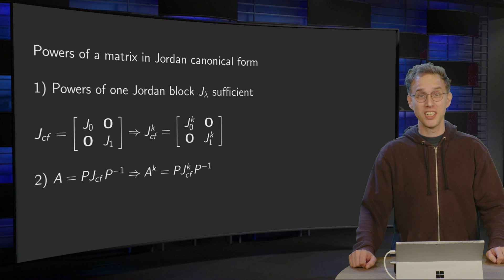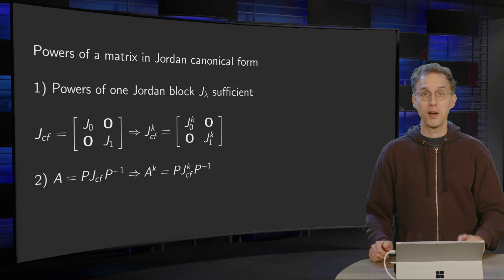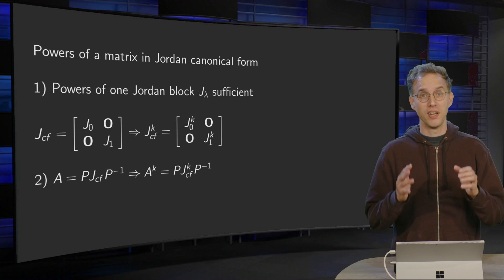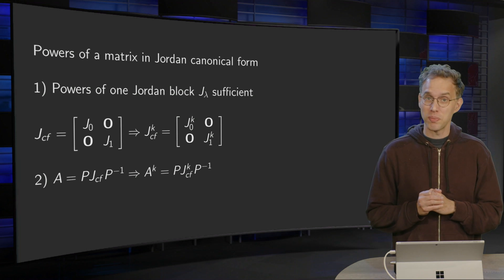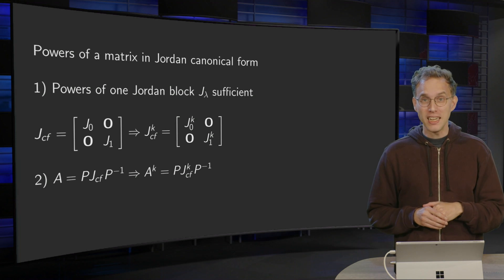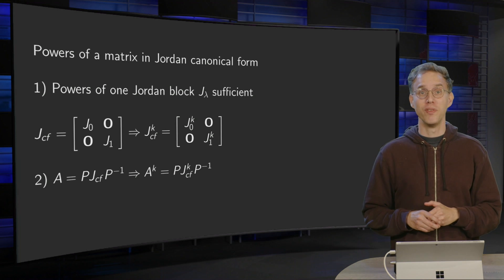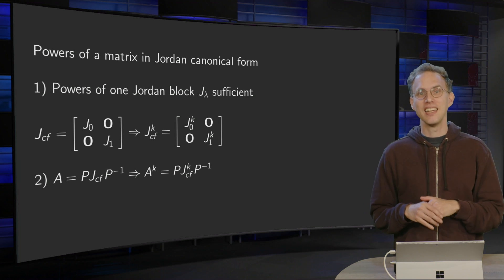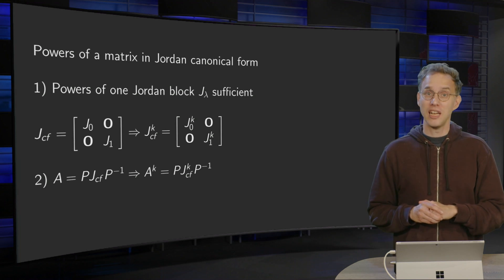For discrete dynamical systems we need to compute powers of matrices. So how about powers of matrices in Jordan canonical form? Computing powers of J_λ minus λI is easy, but unfortunately that does not help. We can do a nice little trick though. Computing the matrix exponential of J_λ is easy, and using this exponential we can compute all the powers of J_λ. In the end we are left with a fairly easy formula. You will learn all of this in this web lecture, so let us get started.